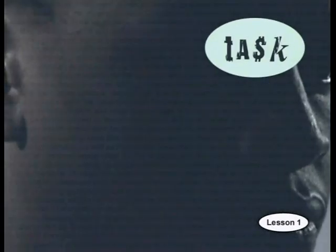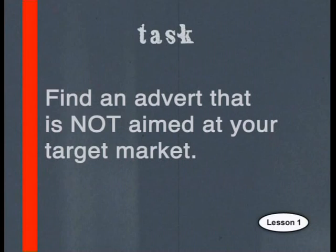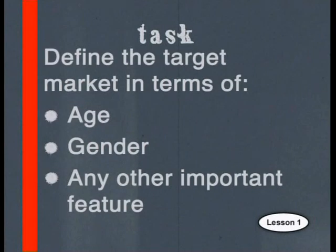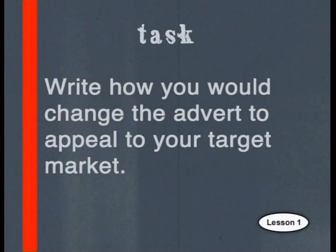Here is the task to help you understand target markets better. Find an advert in a newspaper, magazine or on TV that is not aimed at you as the target market. Define the target market in terms of age, gender and any other feature you think is important, such as what their interests are or how much money they earn. Then, write down how you would change the advert to appeal to your target market.